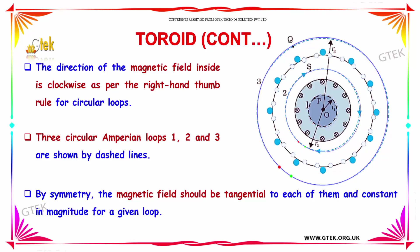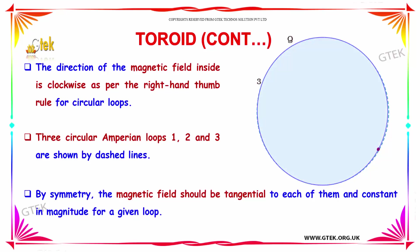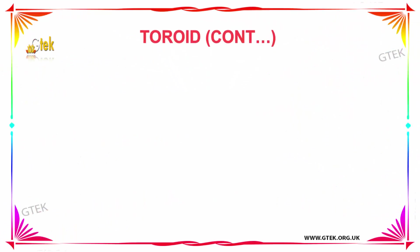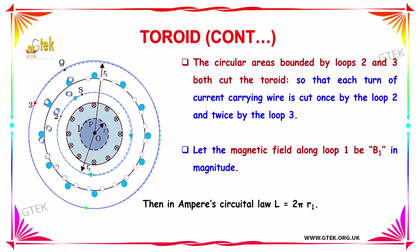As per the right-hand thumb rule for circular loops, three circular Ampere's loops 1, 2, and 3 are shown by dashed lines. By symmetry, the magnetic field should be tangential to each of them and constant in magnitude for a given loop. The circular areas bounded by loops 2 and 3 both cut the toroid, so that each turn of the current-carrying wire is cut once by loop 2 and twice by loop 3.